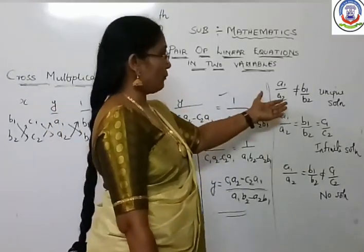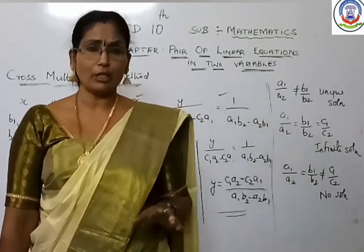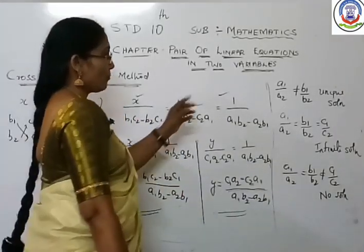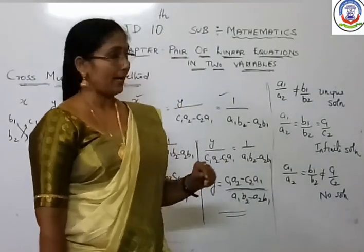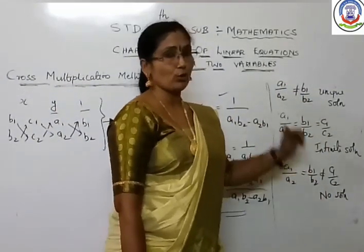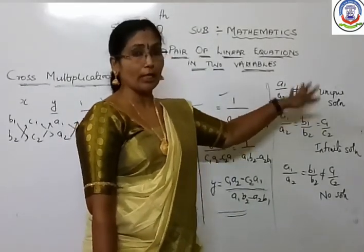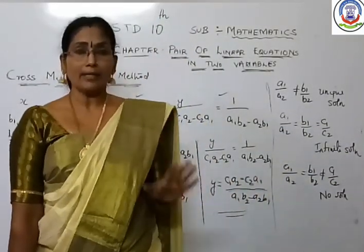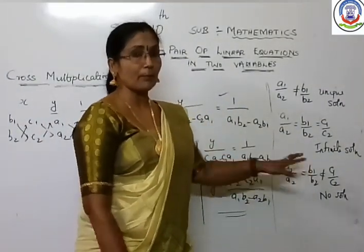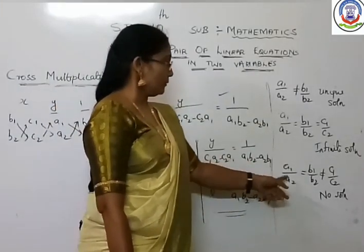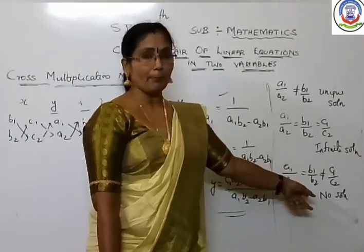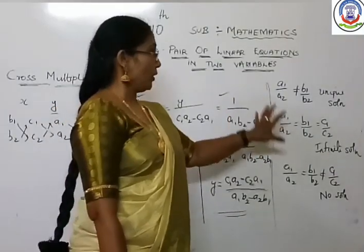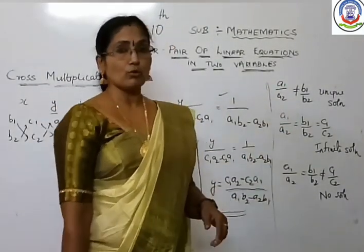We have also seen how to find out whether linear equations in two variables have a unique solution, no solution, or infinite solutions. The condition: when a1/a2 is not equal to b1/b2, it is a unique solution. If a1/a2 = b1/b2 = c1/c2, we have infinite solutions — both equations represent the same line. And if a1/a2 = b1/b2 but c1/c2 is not equal, that is no solution.